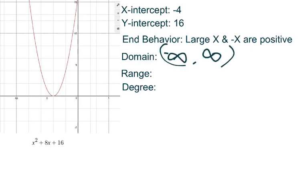The domain represents our x-values, and in this function, our x-values are infinite. So we would get negative infinity to positive infinity.